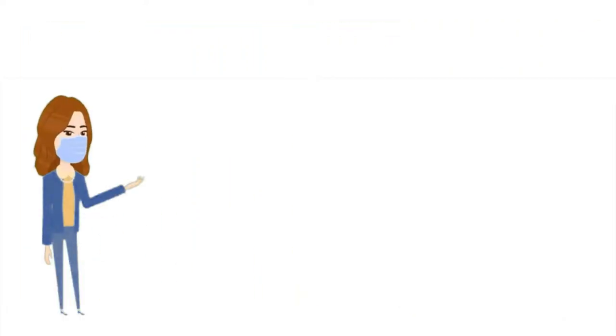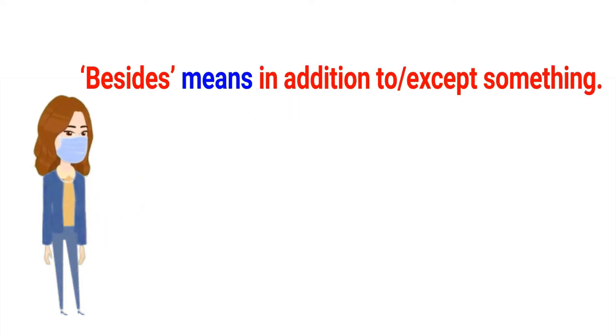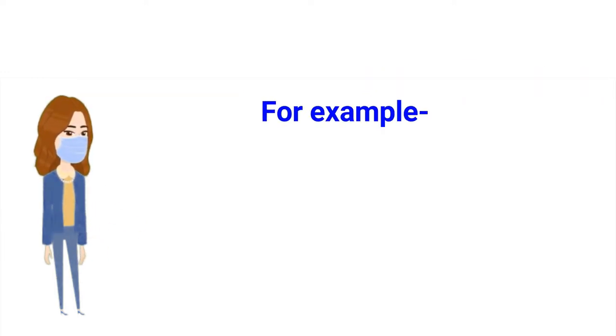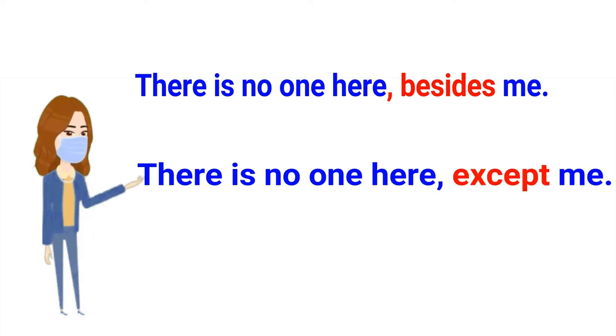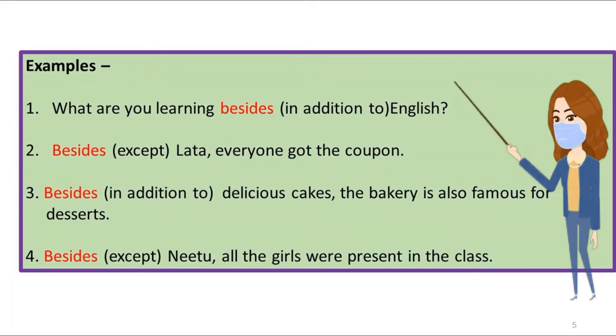The next preposition is besides. The preposition besides means in addition to or except something. For example, there is no one here besides me. It means there is no one here except me. Let us read some more examples to understand the usage of the preposition besides.